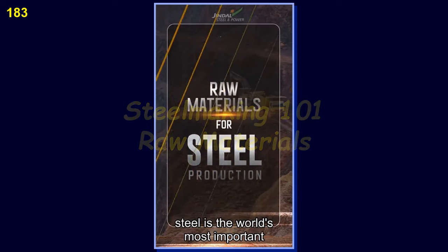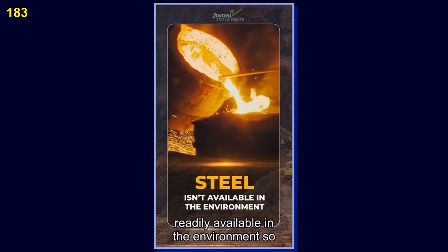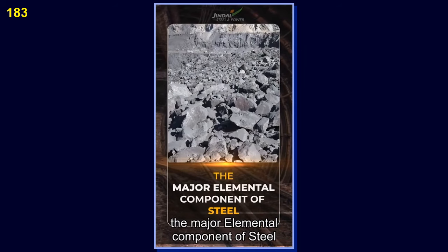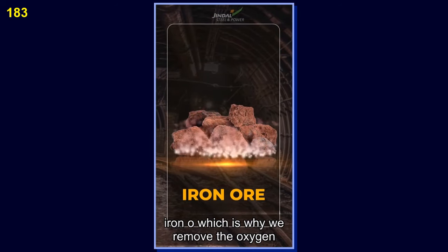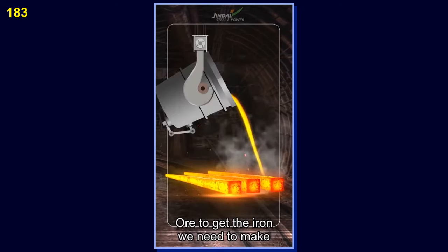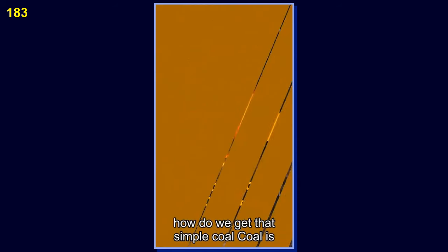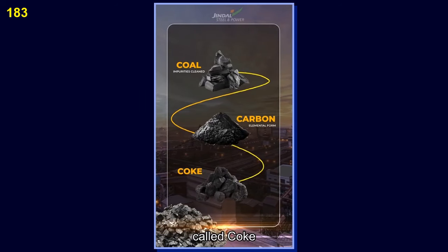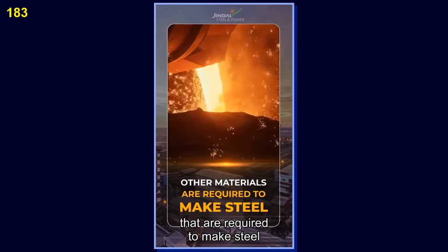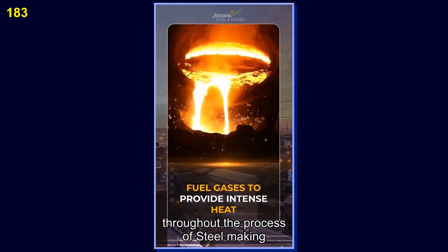This is a short video on the raw materials for the production of iron. Steel is the world's most important engineering and construction material. Steel isn't readily available in the environment, so many materials are brought together to make it — the primary material being iron, the major elemental component of steel. But iron is present in the earth's crust in its oxidized form called iron ore, which is why we remove the oxygen and all the other impurities from the ore to get the iron we need to make steel. Then comes carbon — coal is cleaned of impurities, resulting in an almost elemental form of carbon called coke. Other materials required include limestone, which removes impurities like silica and sulfur, and fuel gases to provide intense heat throughout the steelmaking process.